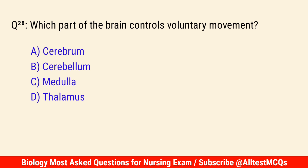Q28. Which part of the brain controls voluntary movement? The correct answer is A: Cerebrum.